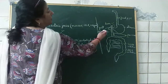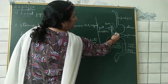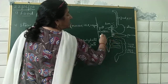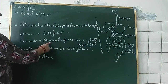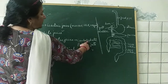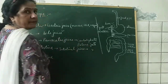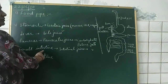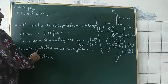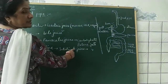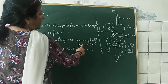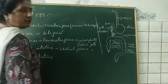The pancreas also releases pancreatic juice. Pancreatic juice contains enzymes which help in the digestion of carbohydrates, proteins, and fats. The food then enters into the small intestine, where the inner wall secretes intestinal juice. This intestinal juice also helps in the digestion of carbohydrates, proteins, and fats.